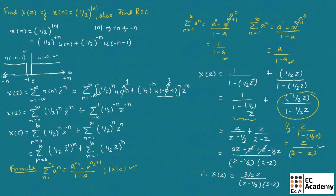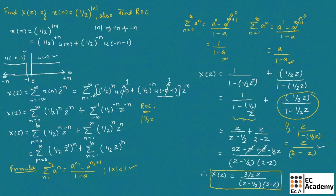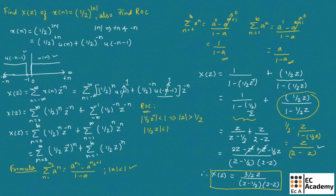This is the Z-transform of the given X of N. Now let us find the ROC. For the first term, the condition is magnitude of 1 by 2 Z inverse less than 1, which gives magnitude of Z greater than 1 by 2. For the second term, the condition is magnitude of 1 by 2 Z less than 1, which gives magnitude of Z less than 2. Combining both conditions, the ROC is 1 by 2 less than magnitude of Z less than 2.